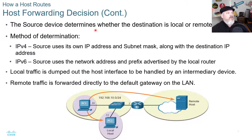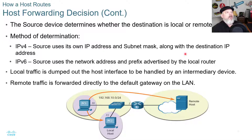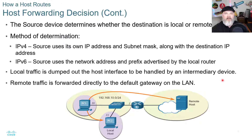The source device determines whether the destination is local or remote. On IPv4, the source uses its own IP address and subnet mask along with the destination IP address. On IPv6, the source uses the network address and prefix advertised by the local router. Local traffic is sent out the host interface to be handled by an intermediary device, while remote traffic is forwarded directly to the default gateway on the LAN.